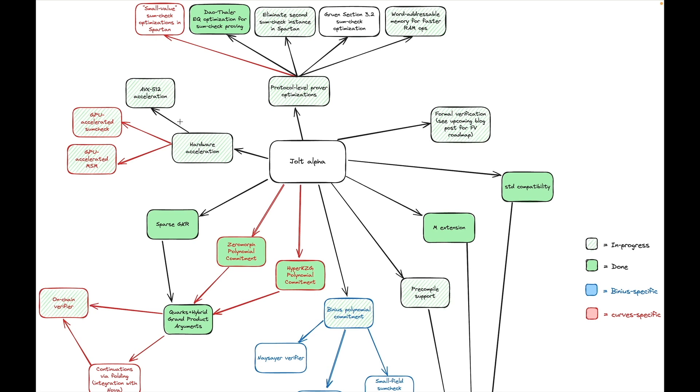Quick context: when we released Jolt back in April, we demonstrated that if you ignore issues like support for precompiles and GPU integrations, which are on the Jolt roadmap but are not yet done, then Jolt was as fast or faster than other RISC-V ZKVMs. Since then, other benchmarks have confirmed that finding. So you might wonder, what are the key issues that have prevented Jolt from being used widely already?